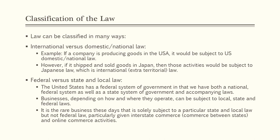The next major category is federal versus state and local law. The United States has a federal system of government with both a national federal system and a state system, meaning both are sovereign and can pass laws. Local law is usually county and city law — cities and counties are not considered sovereigns, but they can still pass laws and ordinances. Businesses, depending on how and where they operate, can be subject to local, state, and federal laws — sometimes all at the same time, particularly given interstate commerce and online commercial activities.